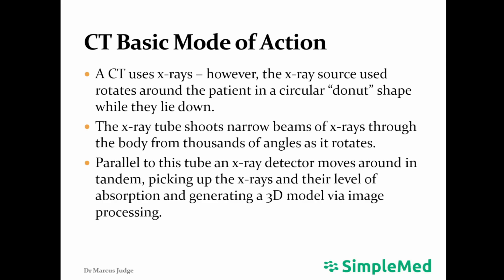A CT scan uses x-rays; however, rather than the x-ray source staying put, the x-ray source rotates around the patient lying within it in a circular donut shape, firing thousands of narrow beams of x-rays from many different angles as it rotates into a parallelly moving x-ray detector. This x-ray detector picks up the x-rays, which have been absorbed based on the density of the tissues they've hit, and feeds it into an image processing model which creates a 3D image.